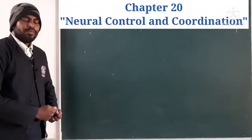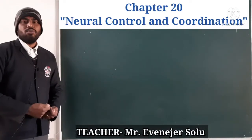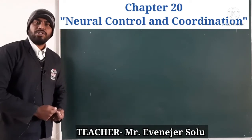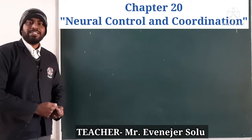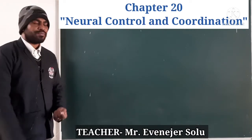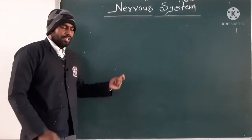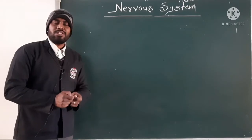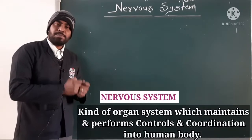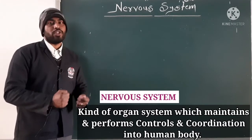Hello students, today we are going to study the new chapter which is chapter number 20 in your NCERT book of biology of 11th class, and the chapter is neural control and coordination. The organ system called the nervous system is responsible for control and coordination in the human body.